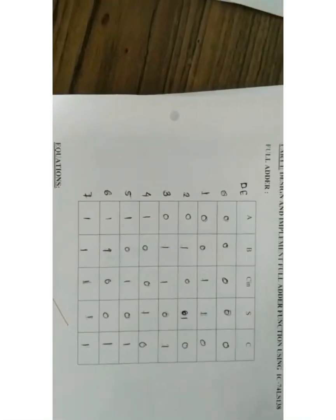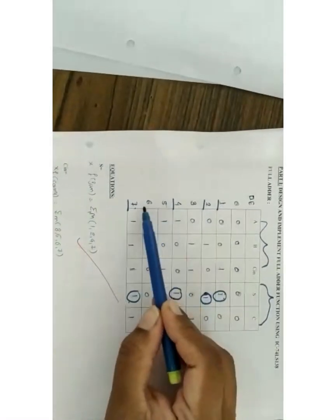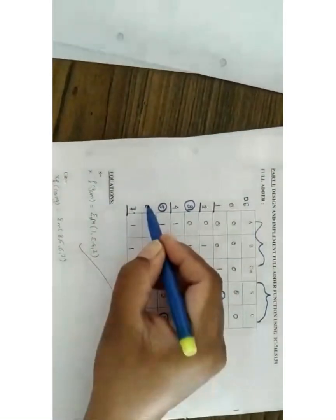The first part is to design and implement a full adder function using IC 74138. From the full adder truth table, we derive SOP equations for sum and carry. For sum, wherever there is a 1 in the output, we note the decimal equivalents: 1, 2, 4, and 7. So the function of sum equals summation m(1, 2, 4, 7). For carry, the 1s appear at positions 3, 5, 6, and 7. So the function of carry equals summation m(3, 5, 6, 7).